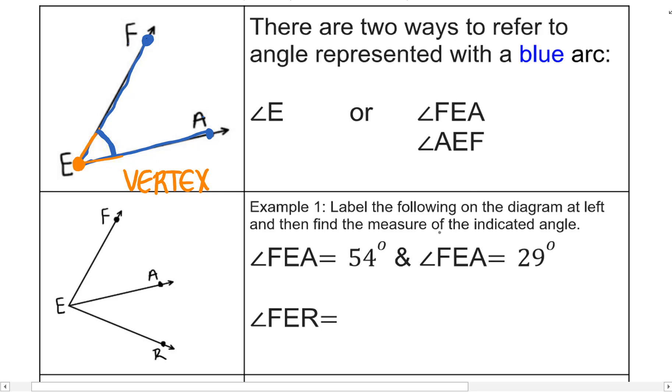Label the following on the diagram at left and then find the measure of the indicated angle. First of all, angle FEA is 54 degrees. F, E, A. The angle here is angle FEA and that is 54 degrees.